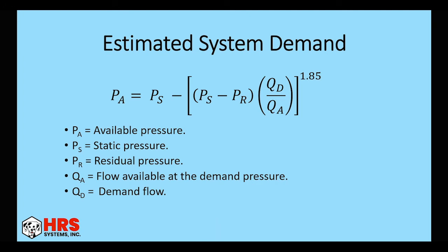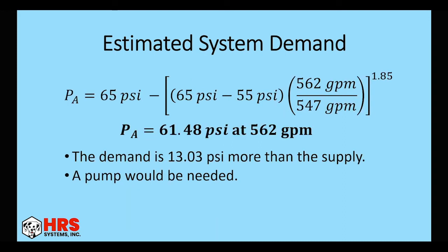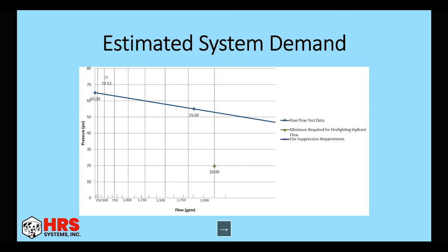So now let's compare our pressures. So our pressure available is what we're trying to achieve here. We have our static, our residual, our flow available at the demand pressure, and then our flow demand. So that's 65 PSI minus 65 PSI, which is our static minus our residual at 55, times our flow that we have and then our flow available. So 562 over 547 to the 1.85. So that gives us 61.48 PSI at our required flow of 562. So the demand is 13.03 PSI more than the supply. So a pump would be needed. So here's the graph. See here, it's well above our water supply curve.